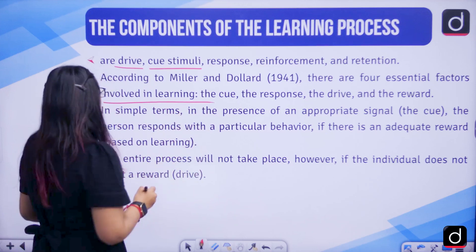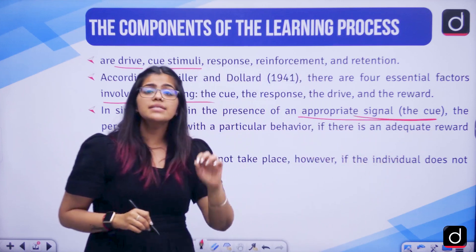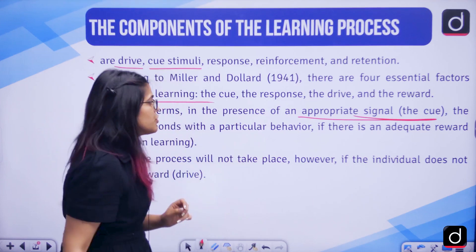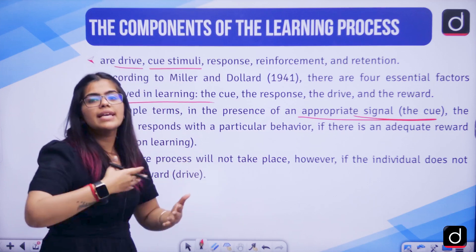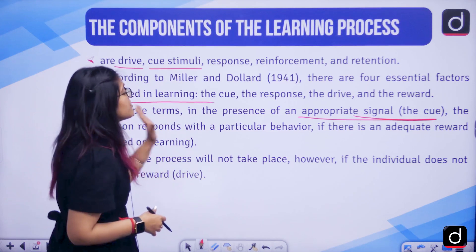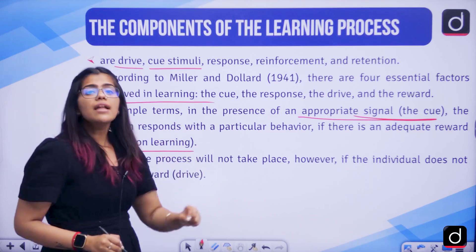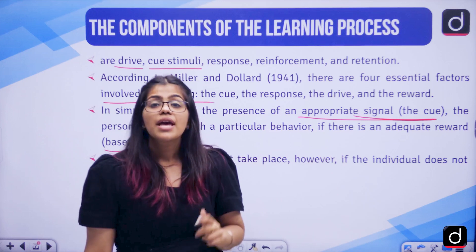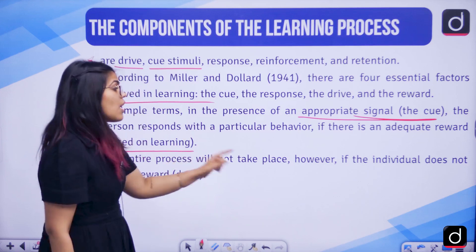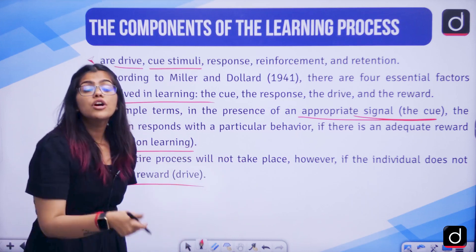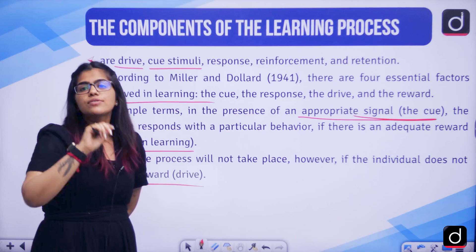In simple terms, in the presence of an appropriate signal — signal means cue — when you know you have to do something, the person responds with a particular behavior they are trained or conditioned in. If there is an adequate reward, they will again and again perform the action. If there is no reward, they will not behave in that particular manner. This reward is the drive — if you want to achieve something, you will have the zeal and enthusiasm to do it; otherwise, you won't.